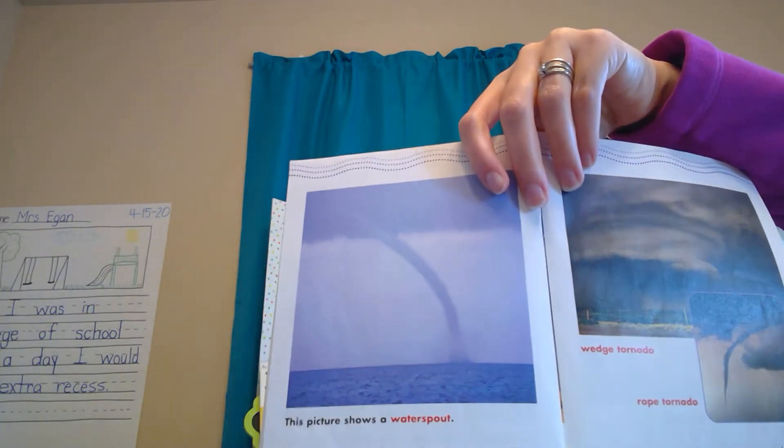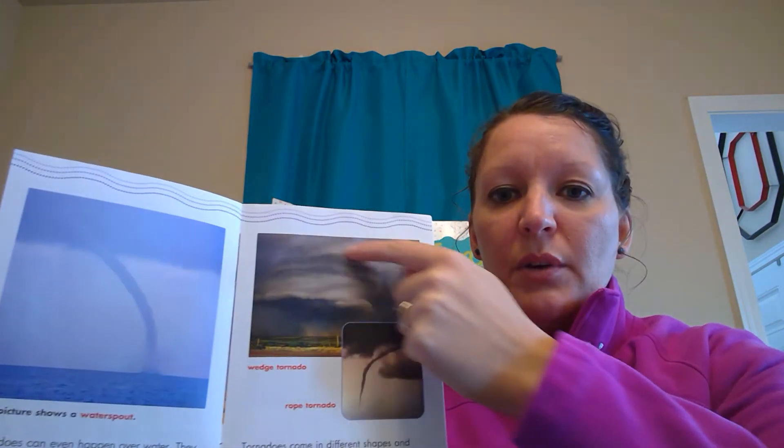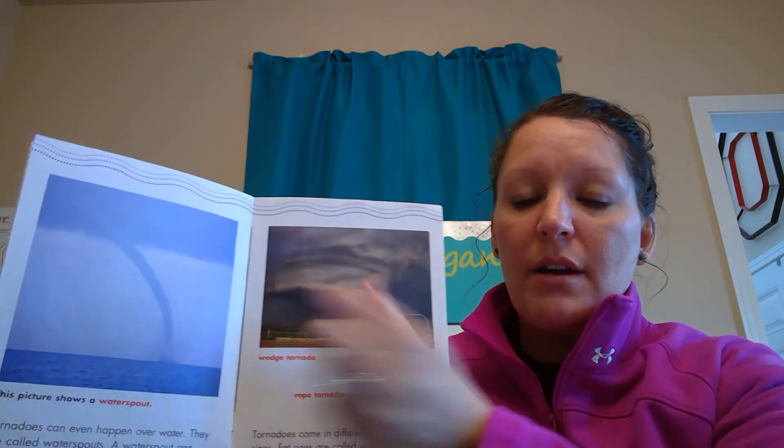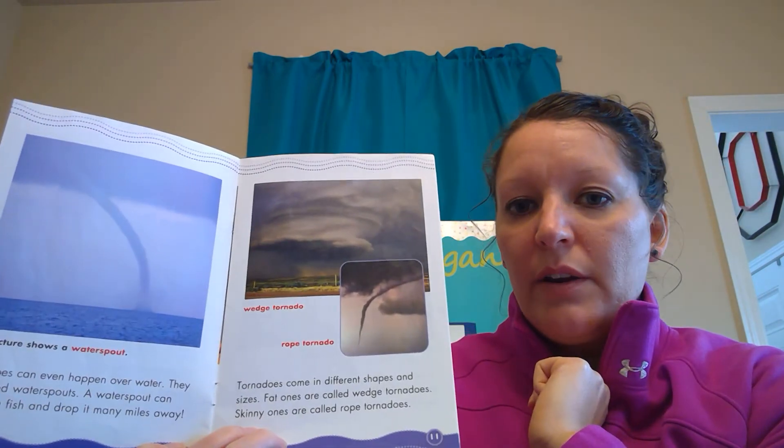Tornadoes can even happen over water. They are called waterspouts. A waterspout can pick up a fish and drop it many miles away. This picture shows the waterspout over the water. Tornadoes come in different shapes and sizes. Fat ones are called wedge tornadoes and skinny ones are called rope tornadoes. This big one up here is a wedge tornado — look how wide across that is. And this is a real thin one here, that's a rope tornado.